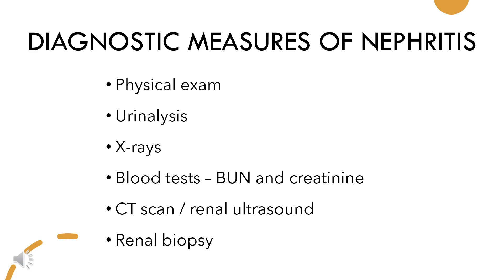Diagnostic measures done to rule out nephritis are physical examination, urine analysis, X-ray, blood tests such as blood urea nitrogen and creatinine, CT scan or renal ultrasound, and renal biopsy.